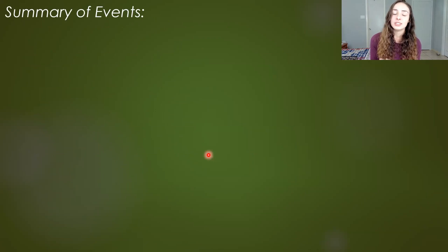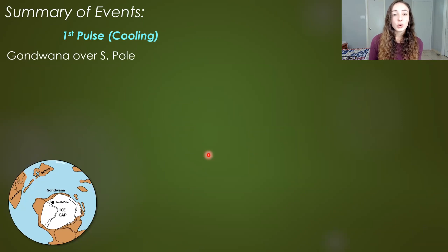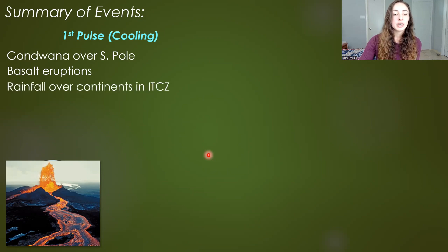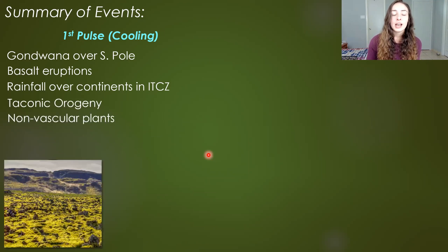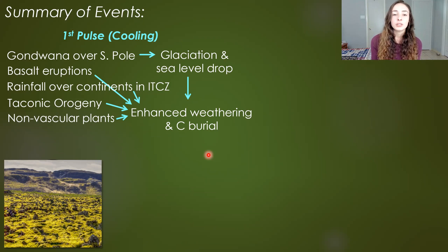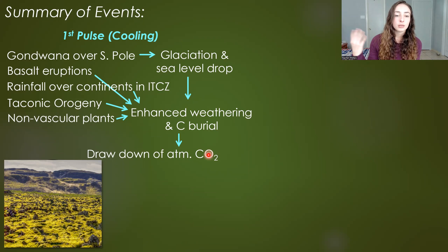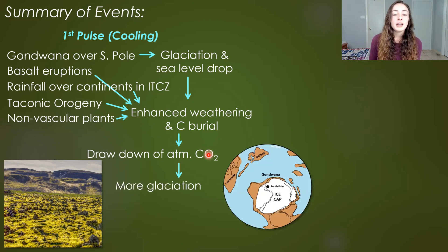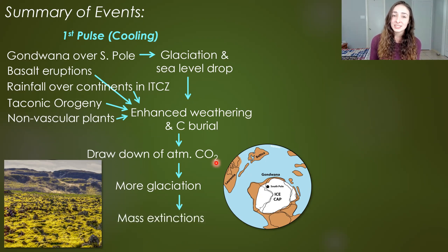To summarize the two major pulses: the first pulse of cooling started with Gondwana moving over the South Pole and ice caps forming, basalt eruptions increasing, rainfall over continents in the intertropical convergence zone, the Taconic Orogeny increasing weathering, and nonvascular plants enhancing weathering and carbon burial. The drawdown of CO2 from this enhanced nutrient flux decreased the greenhouse effect, and the resulting glaciation, cooling, and sea level drop caused mass extinction among warm-adapted and epicontinental sea-dwelling species.